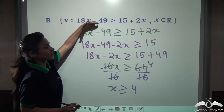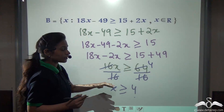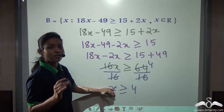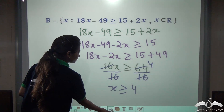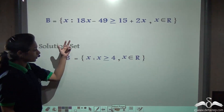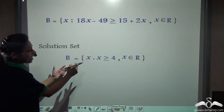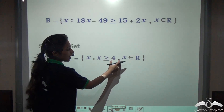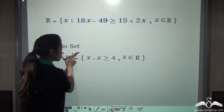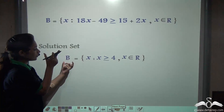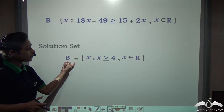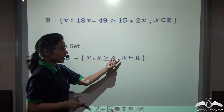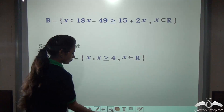The question is in set builder form, so you will write the solution set also in set builder form. You will write this as: x such that x is greater than or equal to 4 and x belongs to real numbers. So the solution set for set B is x such that x is greater than or equal to 4 and x belongs to real numbers.